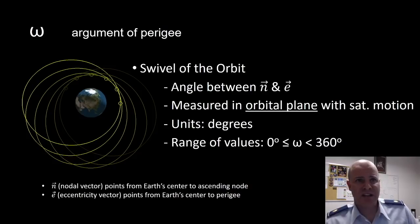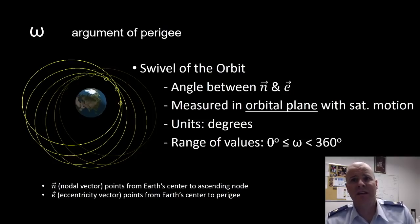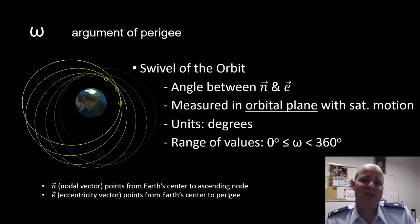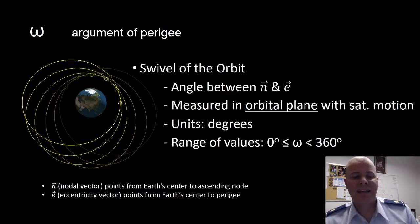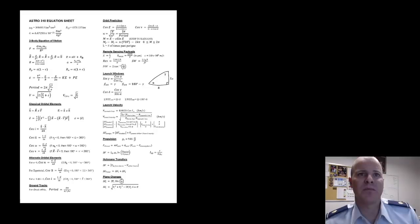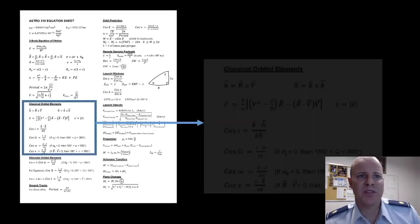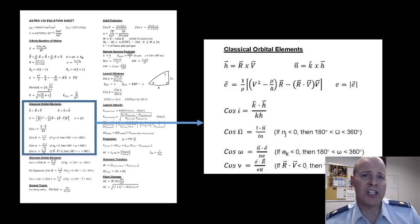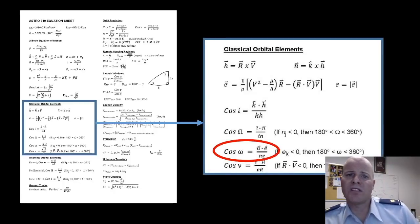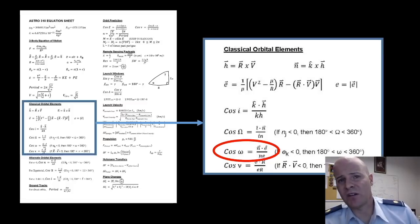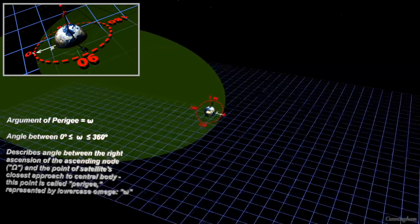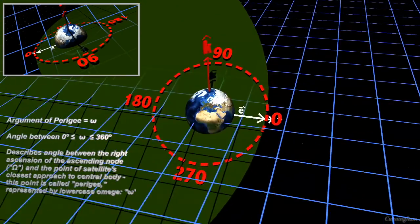Next, we have the argument of perigee, which defines the swivel of our orbit. It's the angle between N and E, measured in the orbital plane in the direction of satellite motion. Its units are given in degrees, and they can have a range of values between 0 and 360. N is our nodal vector, which points from Earth's center to the ascending node, and E is our eccentricity vector, which points from Earth's center to perigee. The cosine of the argument of perigee equals the nodal vector dotted with the eccentricity vector over the magnitude of those two vectors multiplied together. Here's what it looks like for our argument of perigee to change.